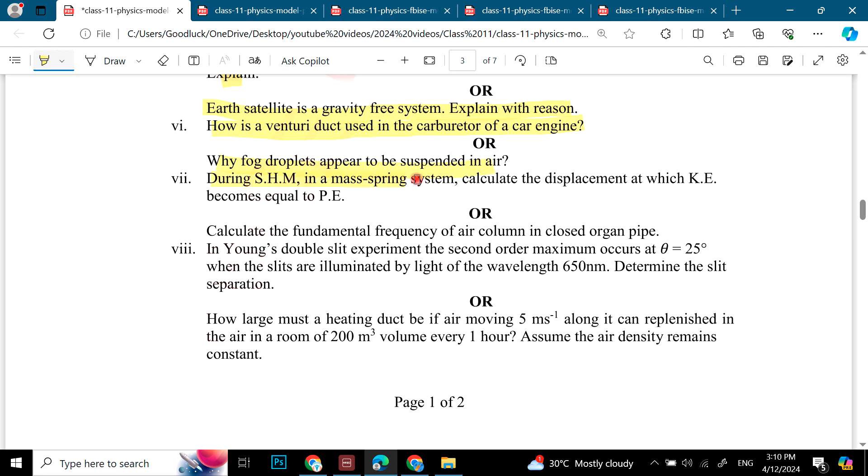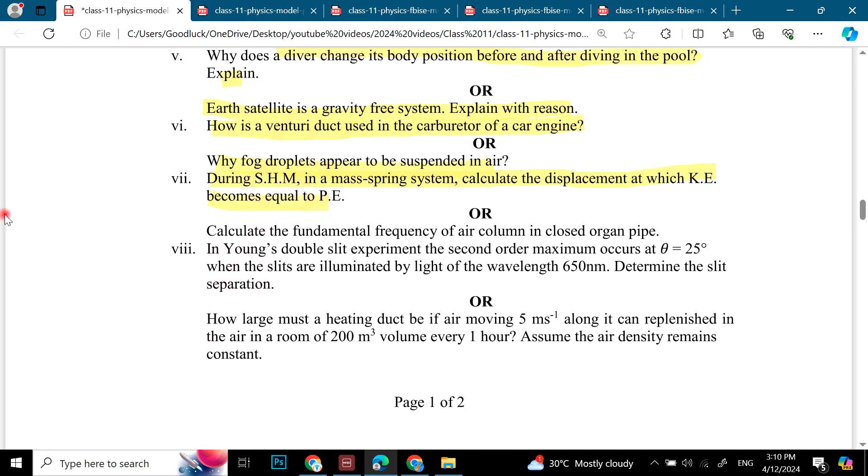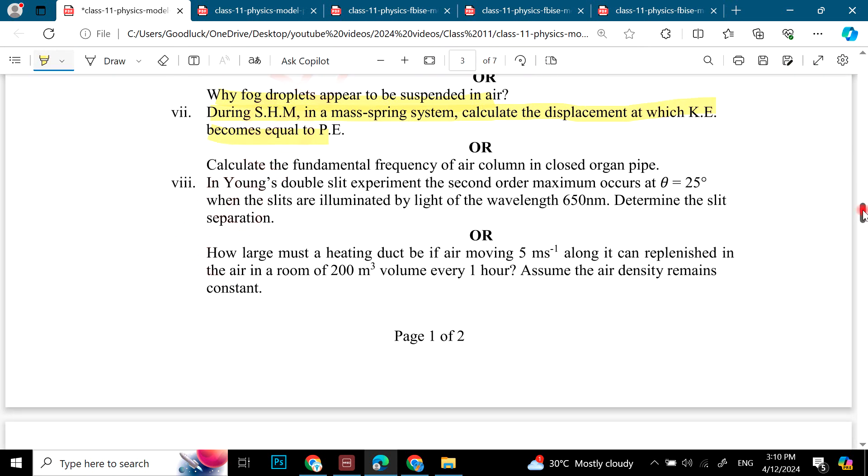Why fog droplets appear to be suspended in air? During simple harmonic motion in mass-spring system, calculate the displacement at which kinetic energy becomes equal to potential energy. These are very important and good questions. Calculate the fundamental frequency of air column in closed pipe. Then we have in Young's double slit experiment the second order maximum occurs at 25 degree. Slits are illuminated by light of wavelength 650. Determine the slit separation.